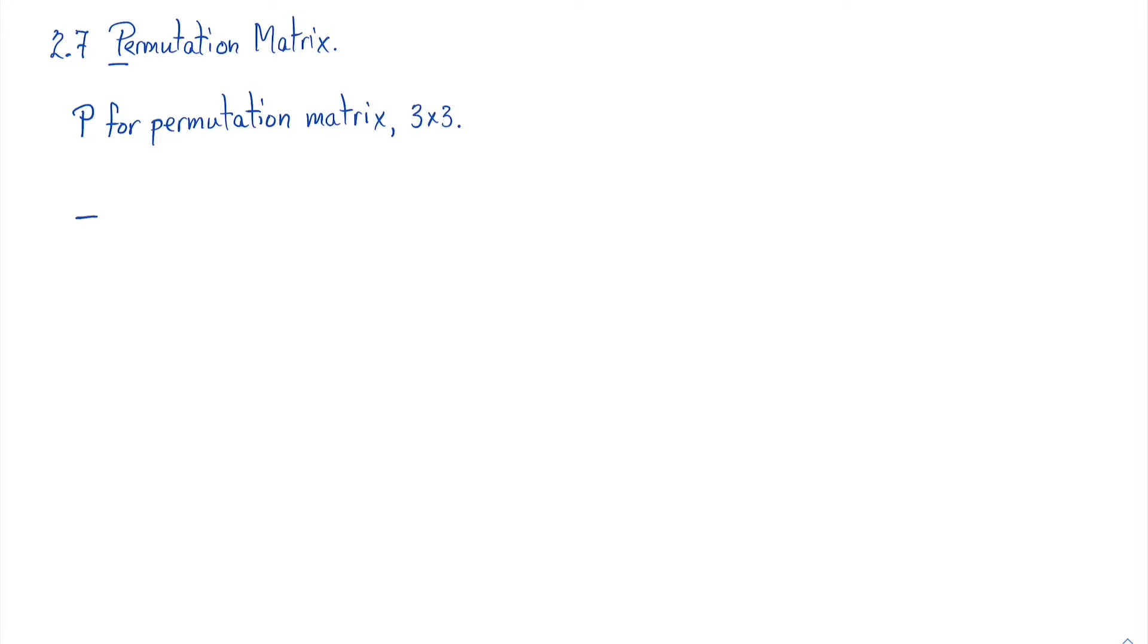Here's how this all begins. The first permutation matrix, P, is actually just I. This all begins with I. So let's write the identity matrix for a 3x3. So I have the first row, 1, 0, 0. Second row, 0, 1, 0. And my third row, 0, 0, 1.